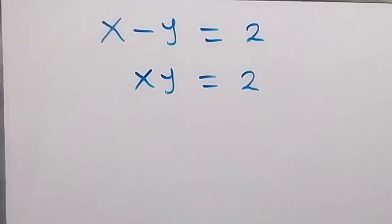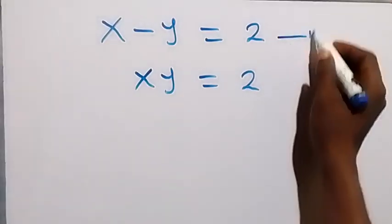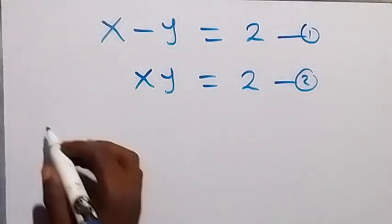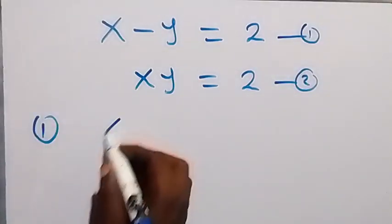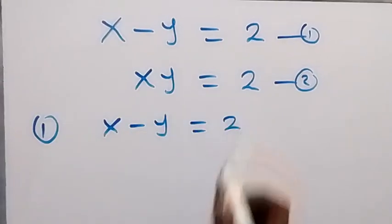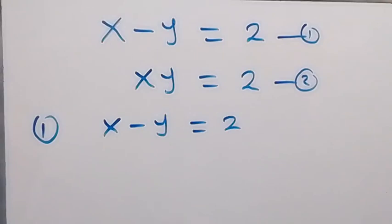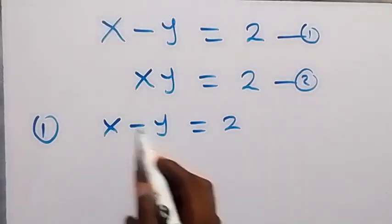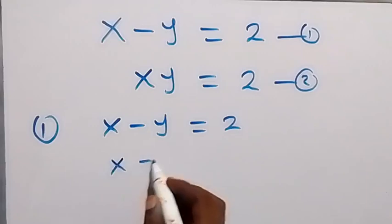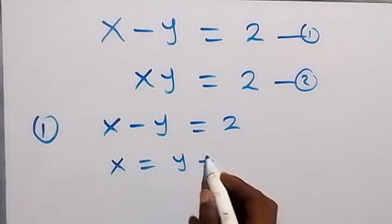Hello, you are welcome. How to solve this system of equations. Let's label this as equation 1 and this as equation 2. From equation 1 we have x minus y equals to 2. We can make x the subject of the formula — take minus y to the other side and it becomes plus. So we have x equals to y plus 2.